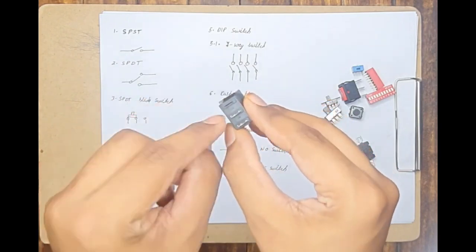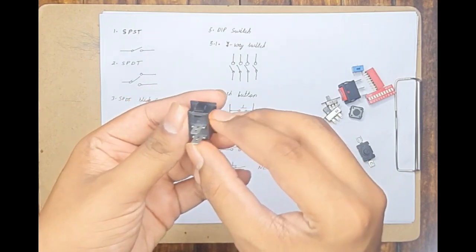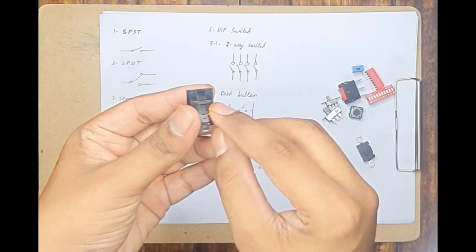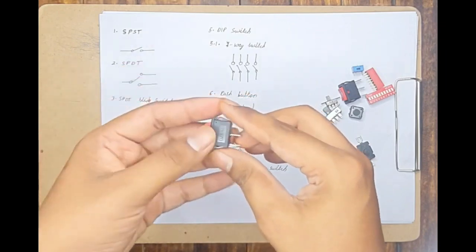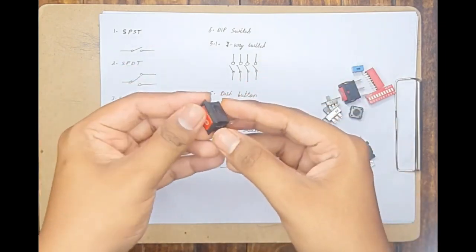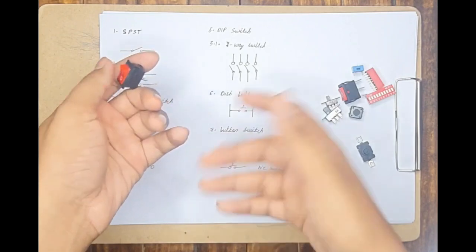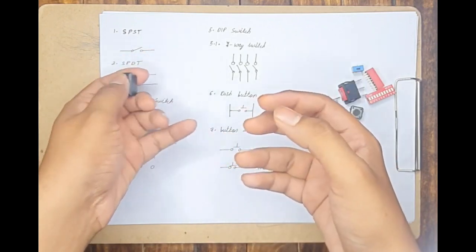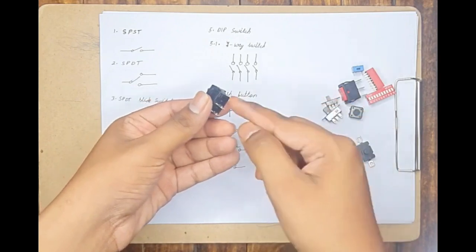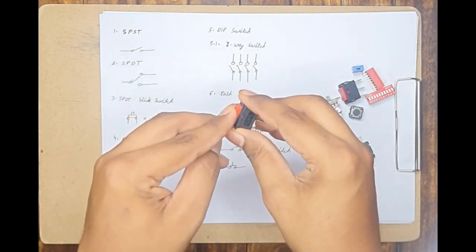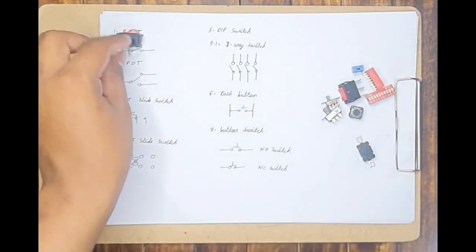Now in most SPST switches you may observe there is a small slit given here. As a fresher you may not understand this, but this slit is given because whenever you are going to buy a new switch, they don't expect you to accidentally turn on or off the switch. Many times people will just click this switch for fun and it might damage it. In order to prevent that, this slit is provided. By keeping a small plastic frame here you can prevent the switch from moving and getting damaged, but once you are using it you can remove the slit and use it as a normal switch.